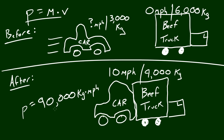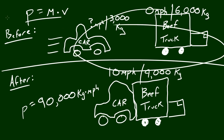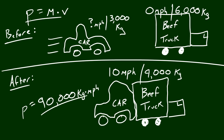Why is that important? Because once we have the total momentum after the collision, we have the total momentum before the collision. So we know before the collision this entire system must have had a momentum of 90,000 kilograms times miles per hour. We also know that this beef truck had zero momentum because it has zero velocity, and whenever something has zero velocity it automatically has zero momentum. So that means this car must have had all the momentum in the system — a momentum of 90,000 before it hit the truck.